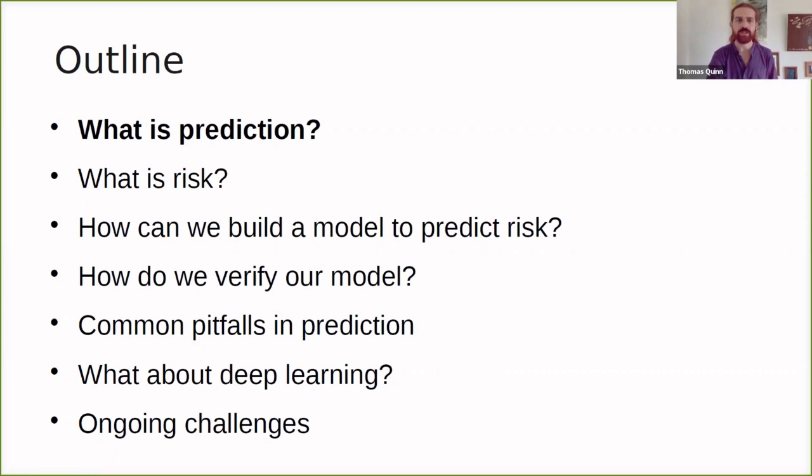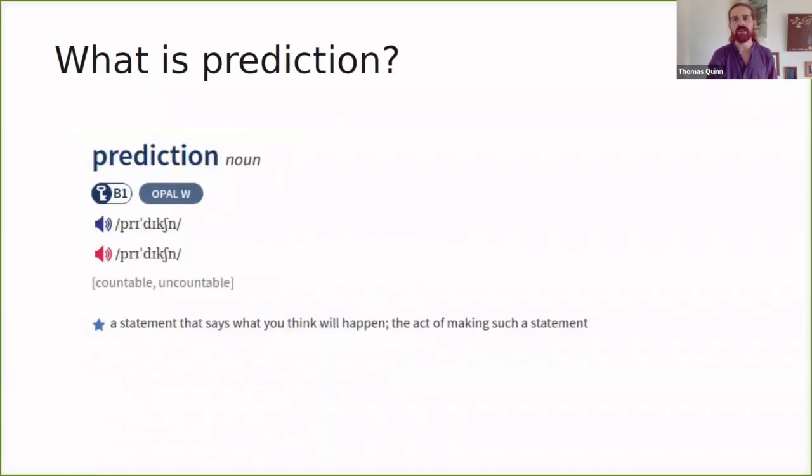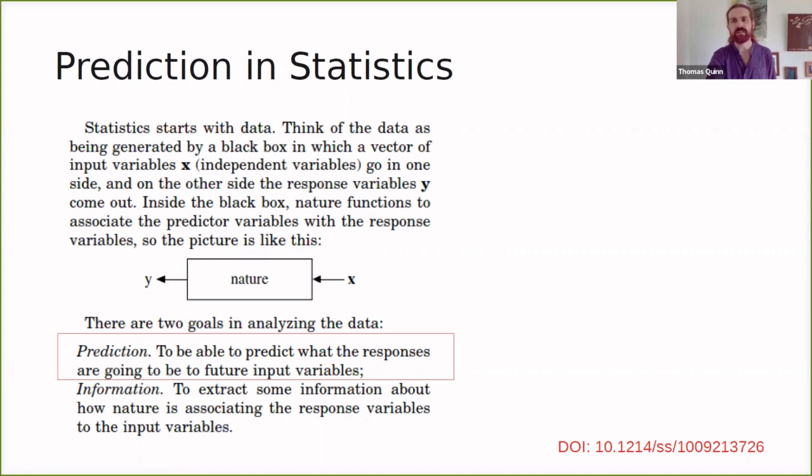So let's start with what is prediction. We pull out a definition from the dictionary. We see that prediction is a statement that says what you think will happen or the act of making such a statement. We can also come up with a more statistical definition of prediction. This is an excerpt from a wonderful paper by Breiman. He writes, statistics starts with data. Think of the data as being generated by a black box in which a vector of input variables X go in on one side and on the other side comes out the response variables Y.